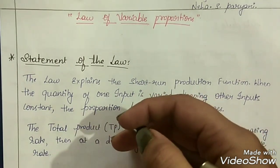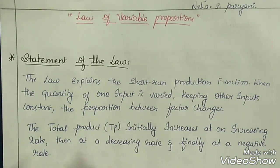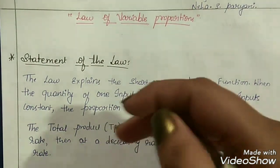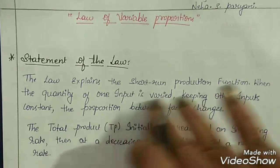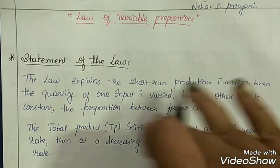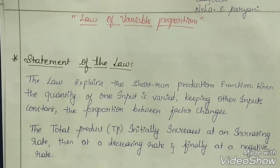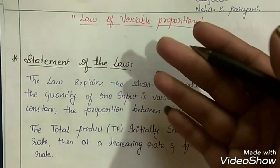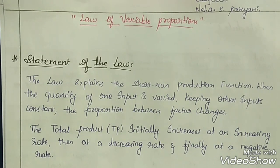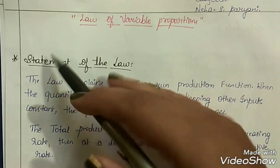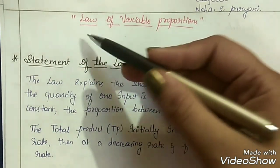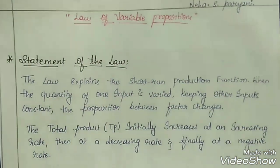In the Long Run Production function, there will be all Variable Factors only — there will be no Fixed Factors. If you want a detailed video on these topics, you can get its link in the description box below. Coming back to the main topic: Law of Variable Proportions.